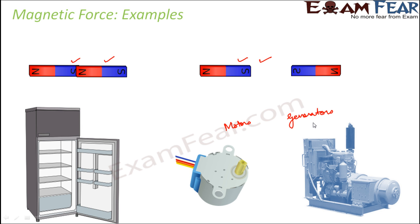So with this we get to know that magnetic force is a non-contact force. It does not need objects to be in contact with each other, and this force is exerted by a magnet on another magnet or on electrically charged particles. A magnet exerts attractive or repulsive force on another magnet as you can see on the screen, but a magnet can also exert attractive forces on nails. So this was about magnetic force.